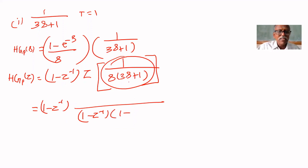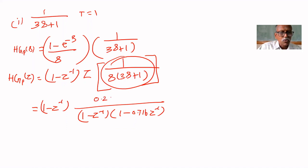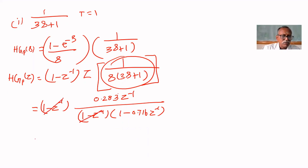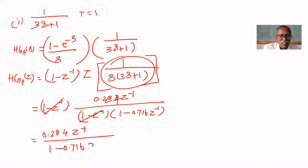We get 1 minus e^(-1/3) which is 0.716, times z^(-1) in the denominator. The numerator gives (1 - e^(-1/3)) times z^(-1), that is 0.283 z^(-1). The (1 - z^(-1)) terms cancel, so HGP(z) equals 0.284 z^(-1) upon (1 - 0.716 z^(-1)).